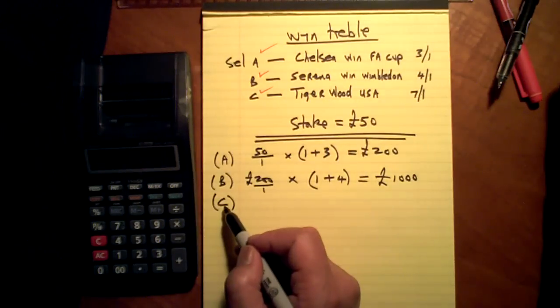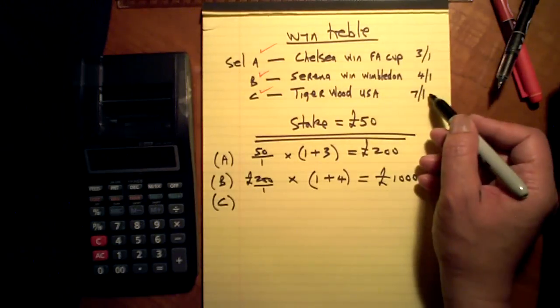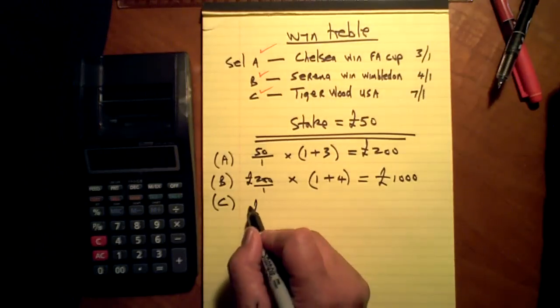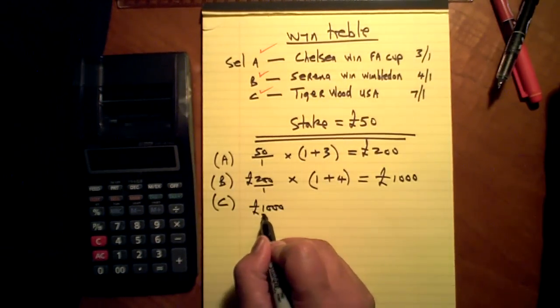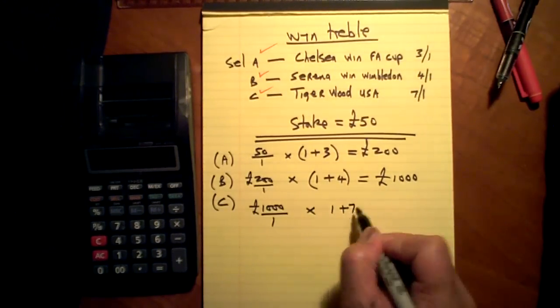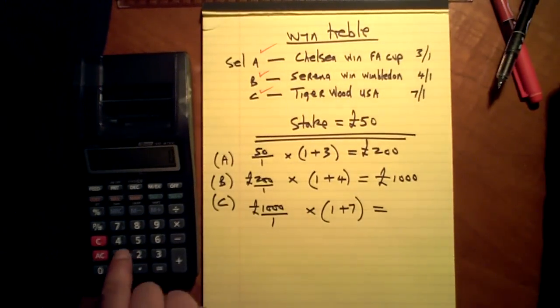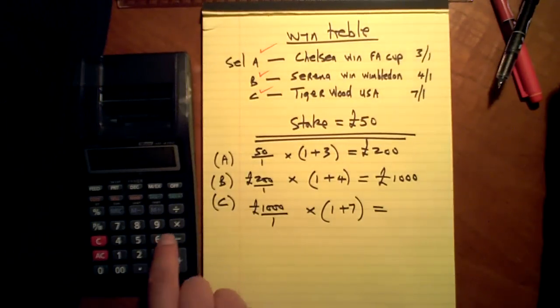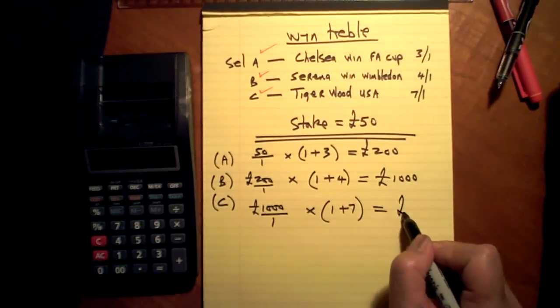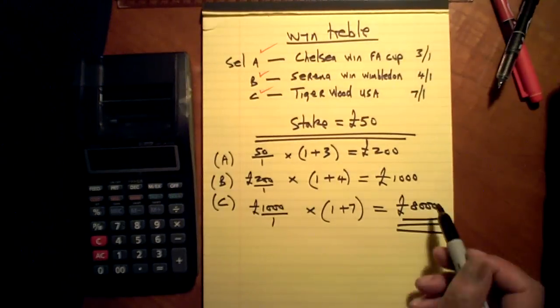Step Three, that one thousand pounds goes onto that, which makes it one thousand divided by one, times one plus seven, equals one thousand divided by one, times eight. Eight thousand pounds.